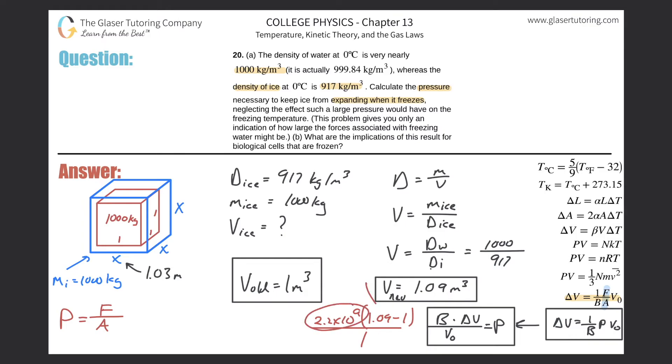Pretty straightforward, actually. So 2.2 times 10 to the 9 times 0.09. And what do we get? It's about 2.0 times 10 to the, looks like 8 to me. And since we're finding pressure, what are the units of pressure? The units of pressure are Pascal. So there's your answer. That's the amount of pressure that's required to prevent this block of water from expanding to this new volume.